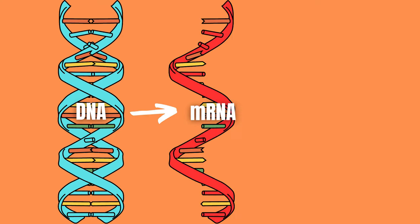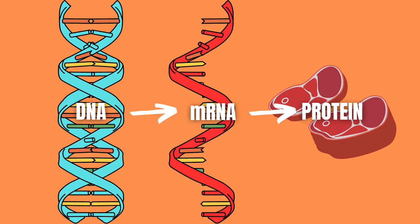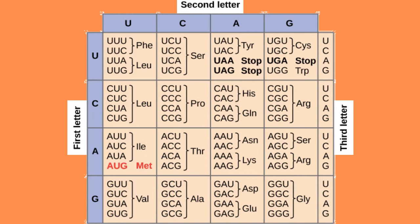DNA makes mRNA makes protein, and to figure out what protein a specific sequence of mRNA creates, we can use a codon table. Today I'll show you how.